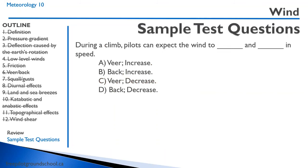During a climb, pilots can expect the wind to blank and blank in speed. In a climb, there is less surface friction, so wind speed increases. When we resolve the vectors including Coriolis force and the pressure gradient force, the wind also veers — increasing in direction. The correct answer is A: veer and increase.